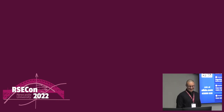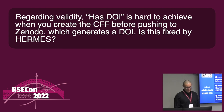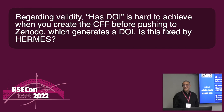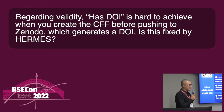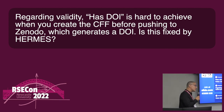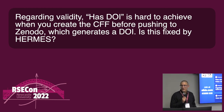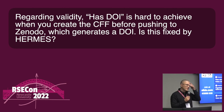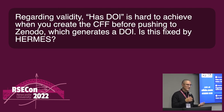The next question is regarding validity and the fact that having a DOI is hard to achieve when you have to create a CFF file before you push to Zenodo, which generates the DOI that then isn't in the CFF file. Is this something Hermes fixes? You don't actually need Hermes - you can reserve a DOI, put it in the CFF file, and circumvent the chicken-and-egg problem. But Hermes will fix this too. There is also a community tool called Zenodraft from Julian Sparks that helps automate this and writes back to the CFF file.